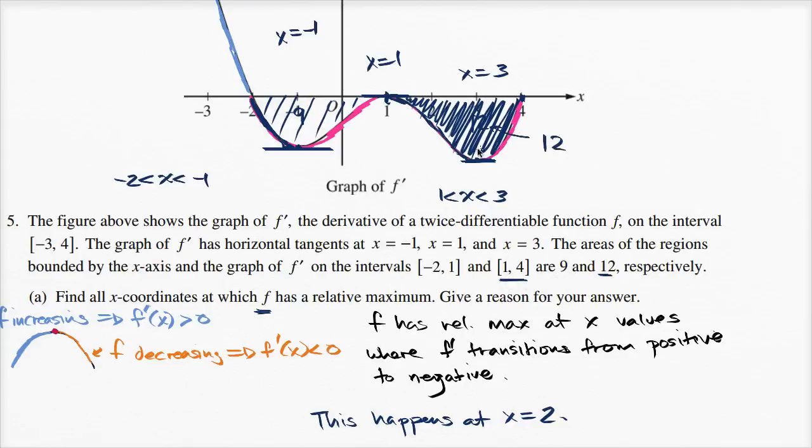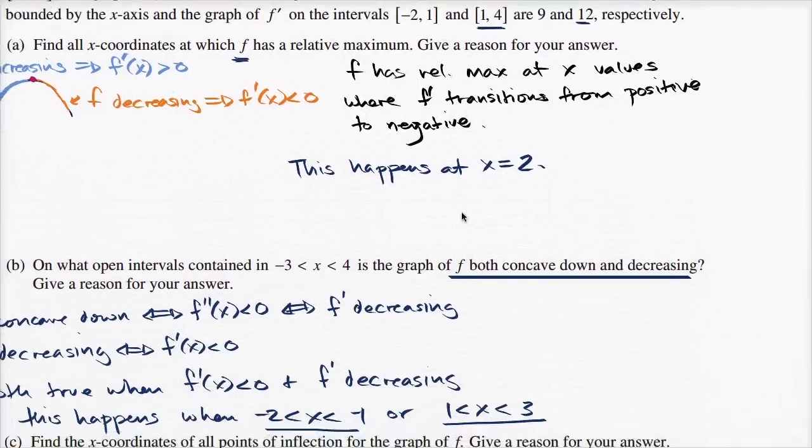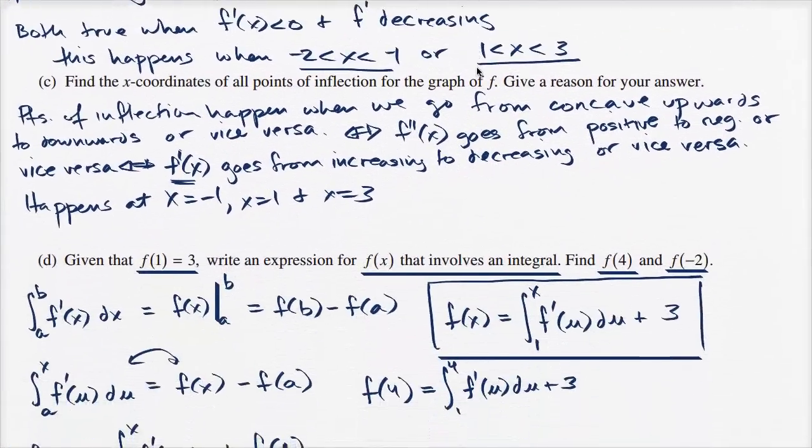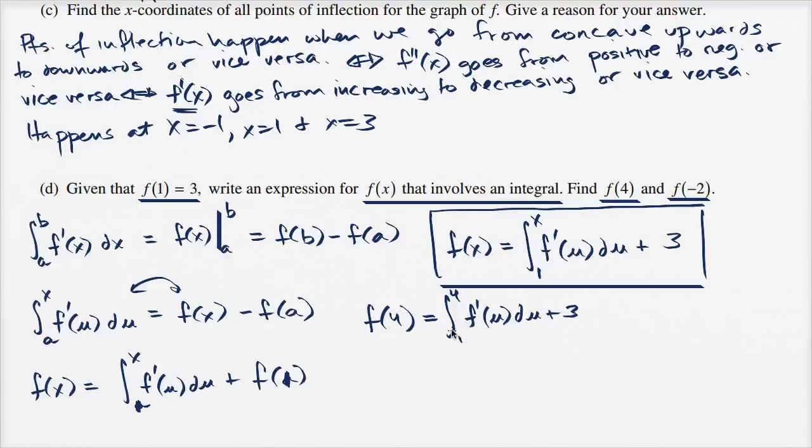So this area over here is 12, but the integral is going to be negative, because our function is below the x axis. So this integral is going to be negative 12. This is negative 12.